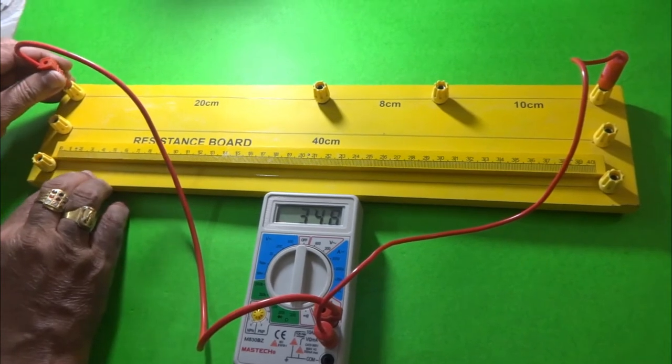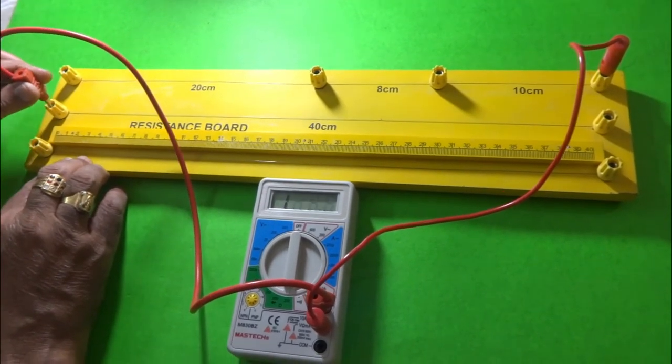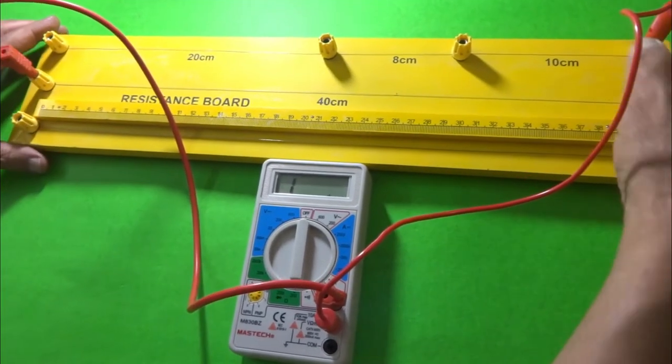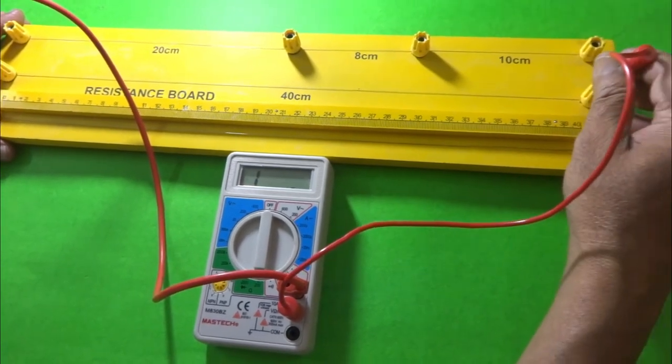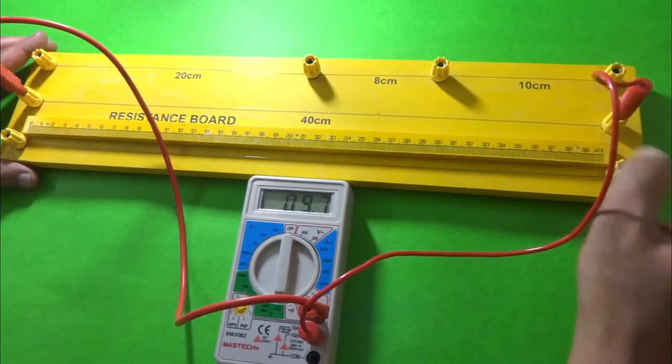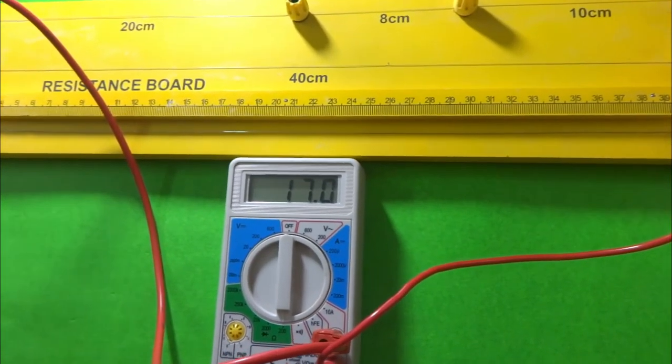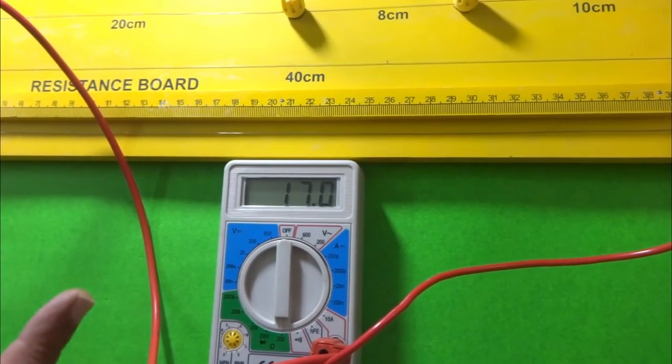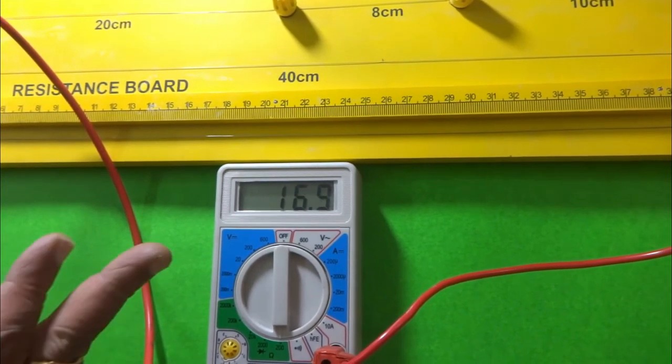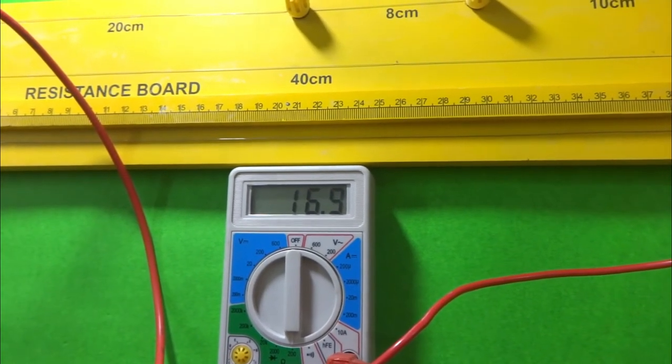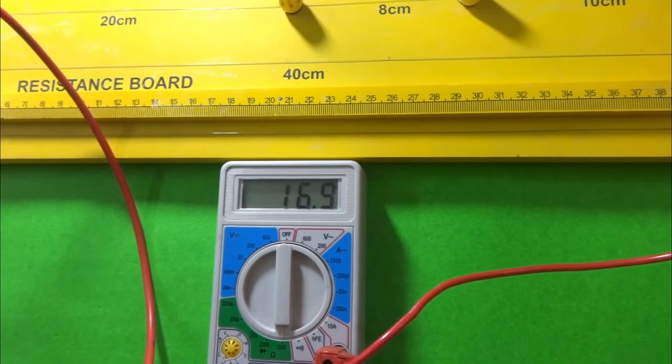If you take the second wire, which is a bit thicker when compared to the first wire, we can observe the resistance of the 40 centimeters wire is around 16.9.